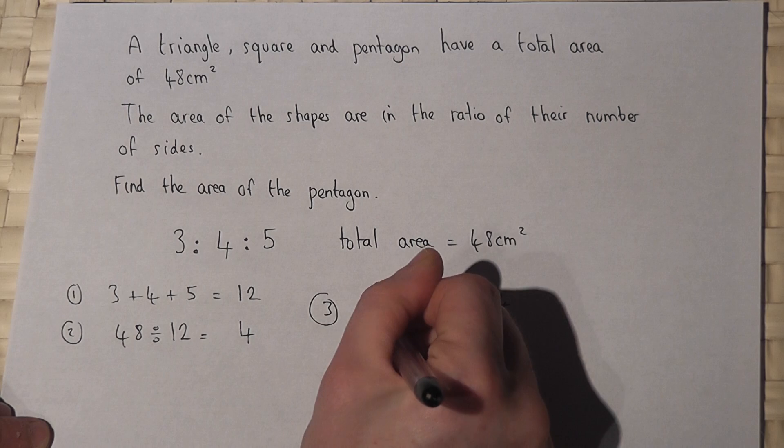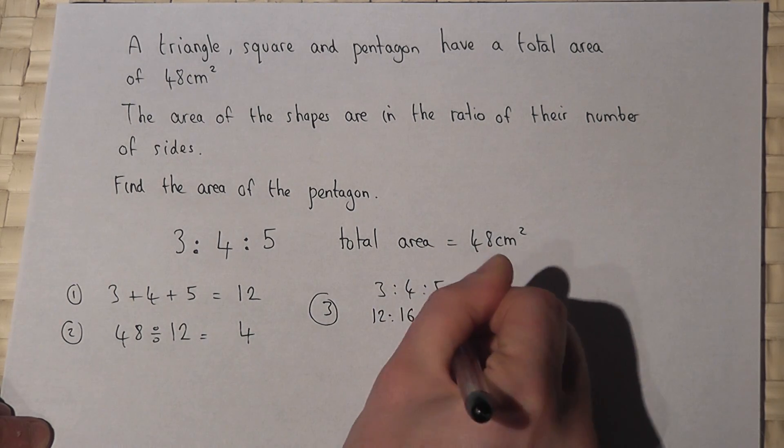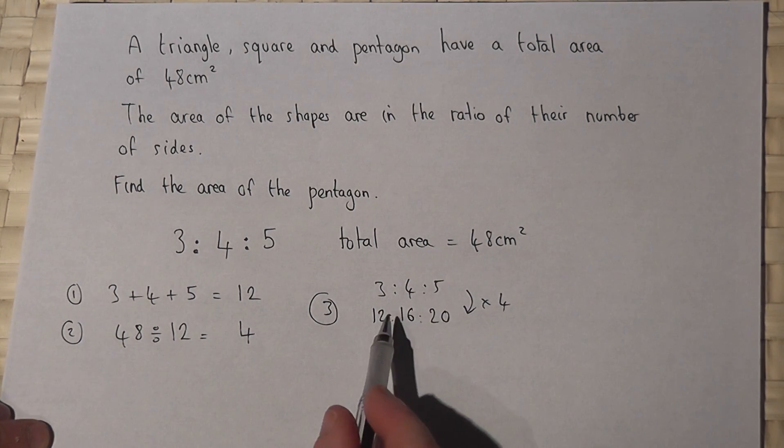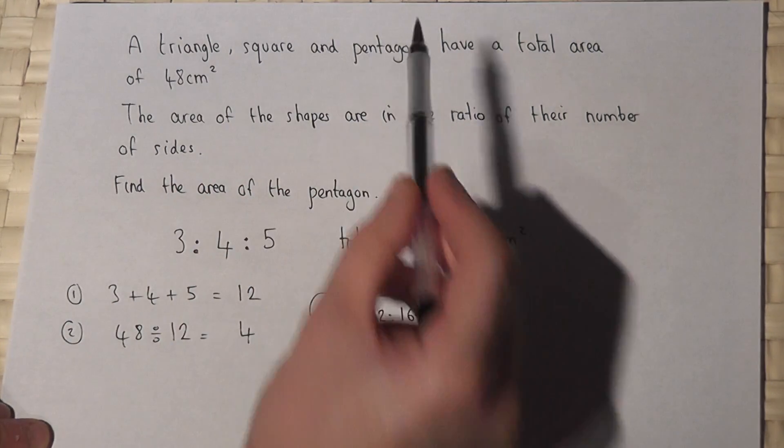I get 12, 16 and 20. And this will give the respective areas of the triangle, square and pentagon.